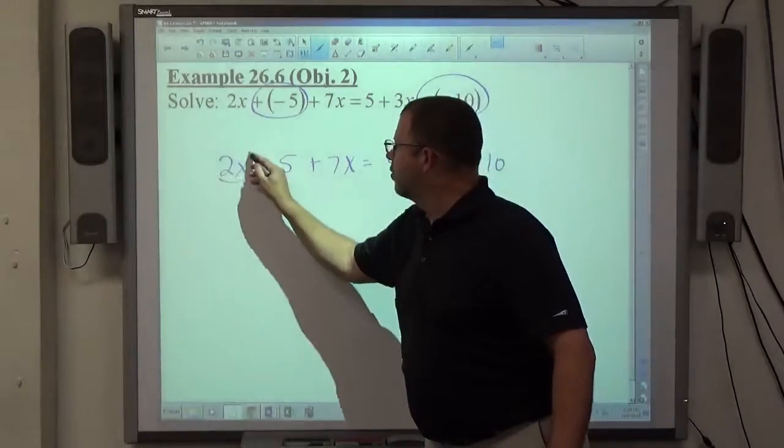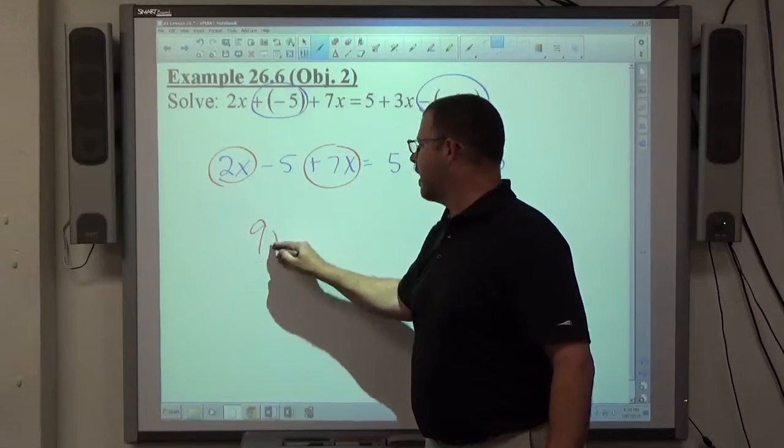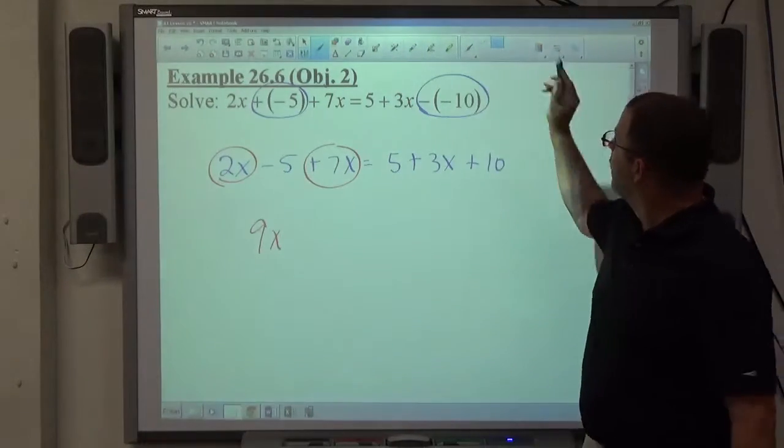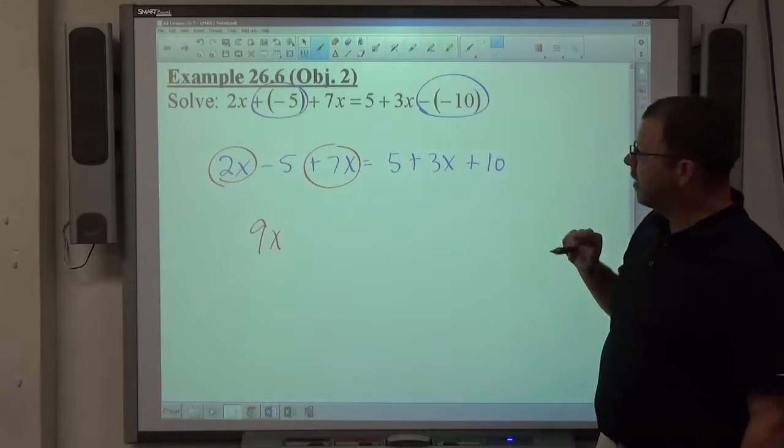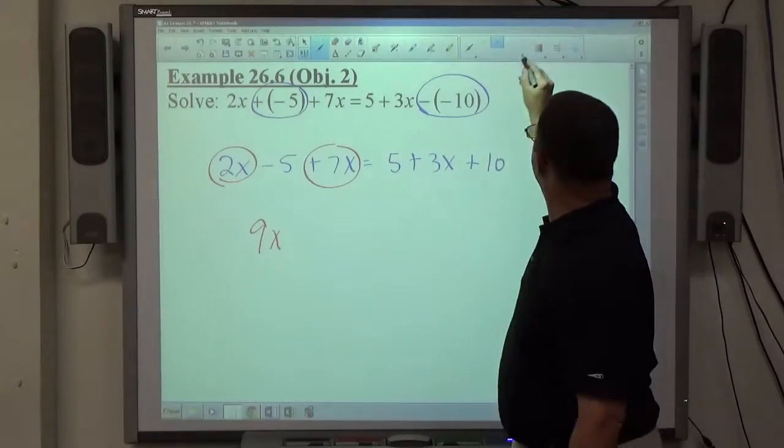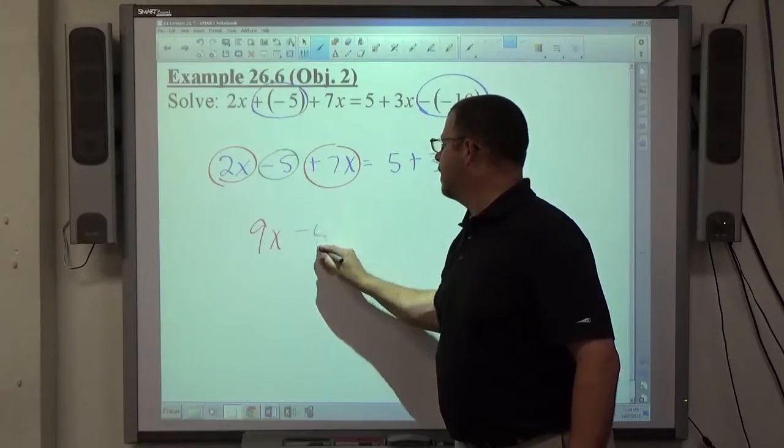We have like terms 2x and plus 7x, which makes total positive 9x. The signs are the same, so I add, and we make sure we get that x on there, and 7 is bigger, so it's positive. Minus 5 has no like terms, so nothing happens to it.